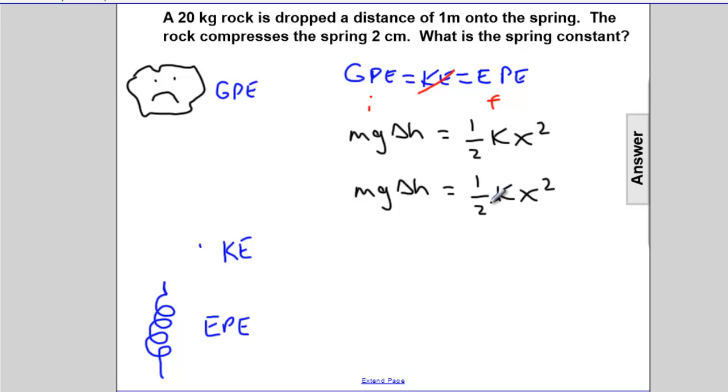We want to get K by itself. It's divided by 2 and multiplied by x squared. The opposite of dividing by 2 is multiplying by 2. Cancel. The opposite of multiplying by x squared is dividing by x squared. Whatever you do on one, you do on the other. Cancel. And K will end up being 2 M G delta H divided by x squared.